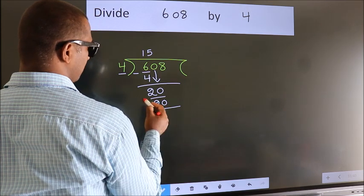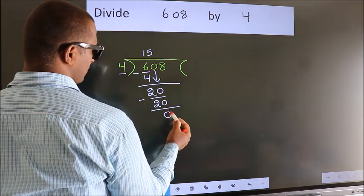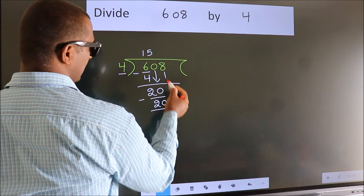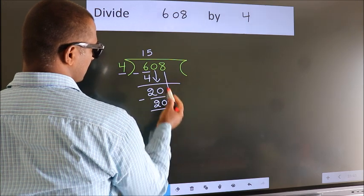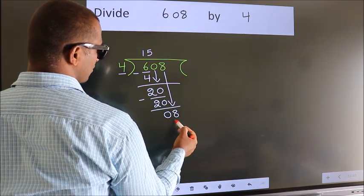Now, we subtract. We get 0. After this, bring down the beside number. So, 8 down. So, 8.